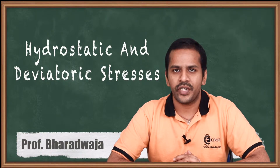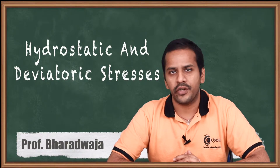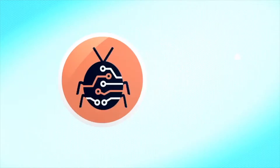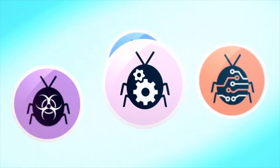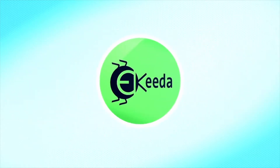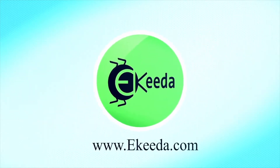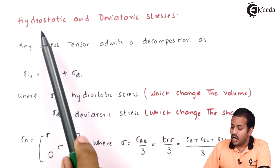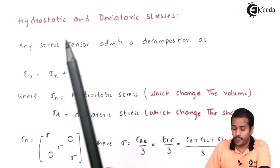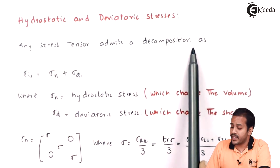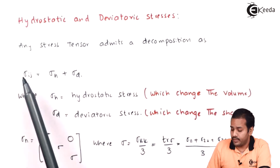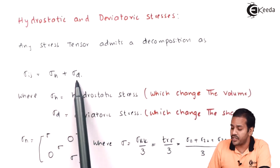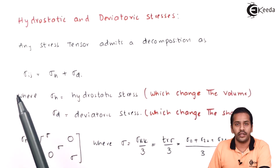Let us learn what is meant by hydrostatic stress and deviatoric stress tensor in the present class. Any stress tensor admits the decomposition — we can write the stress tensor as a summation of the hydrostatic and deviatoric stresses.